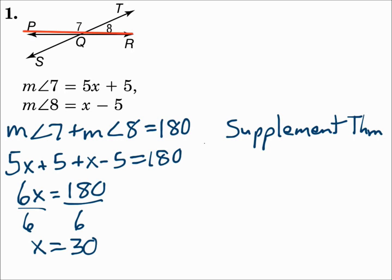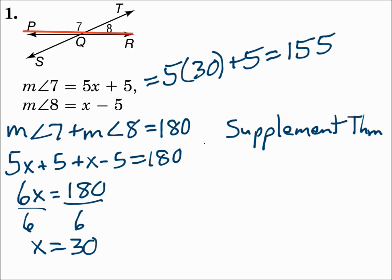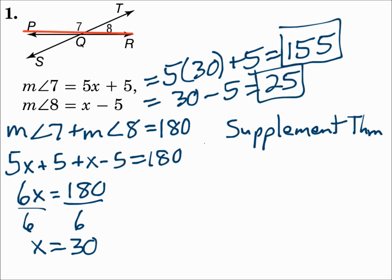But don't stop there — it asked for the angle measures. For the measure of angle 7, substitute 30 in for x, and you get 155 degrees. For the measure of angle 8, substitute 30 in for x, and you get 25 degrees. Remember, this all came about because angle 7 and angle 8 form a linear pair since they make a straight line, so their measures add up to 180 — that's the supplement theorem.